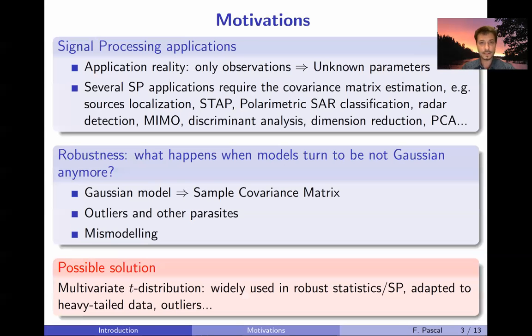So let's go for the introduction. Generally in signal processing applications, in reality we only receive observations or data containing several parameters that are unknown and that we want to estimate. On top of that, in those applications it mainly requires the covariance matrix parameters. So this parameter needs to be estimated. I give a few examples in radar problems as well as in statistical problems like discriminant analysis, dimension reduction, or PCA.